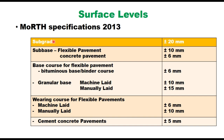According to MORTH specification 2013, the surface level for subgrade can vary in a tolerance of plus or minus 20 mm from the approved drawing. Similarly for subbase, in case of flexible pavement it can be plus or minus 10 mm, and in case of concrete pavement it can be plus or minus 6 mm. Similar tolerances are given for other layers of flexible pavement as well as rigid pavement.